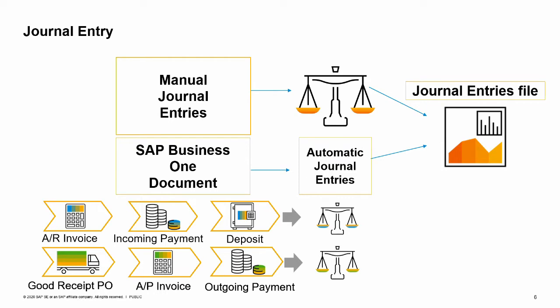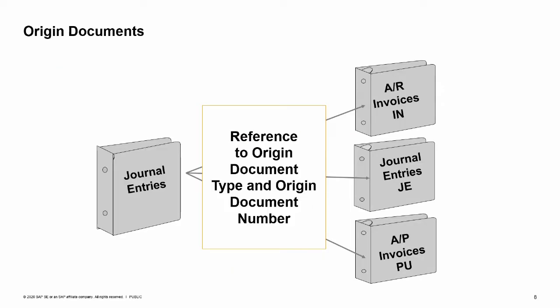You can set various defaults for journal entries, and you can also change some document settings for an individual journal entry. All journal entries refer to the type and number of the origin document, since journal entries are frequently created automatically from another document. For example, IN is used for customer invoices. The origin documents of manual journal entries are the journal entries themselves, so they refer to themselves and are of type JE. Most journal entries refer to other document types, for example PU for AP invoices.